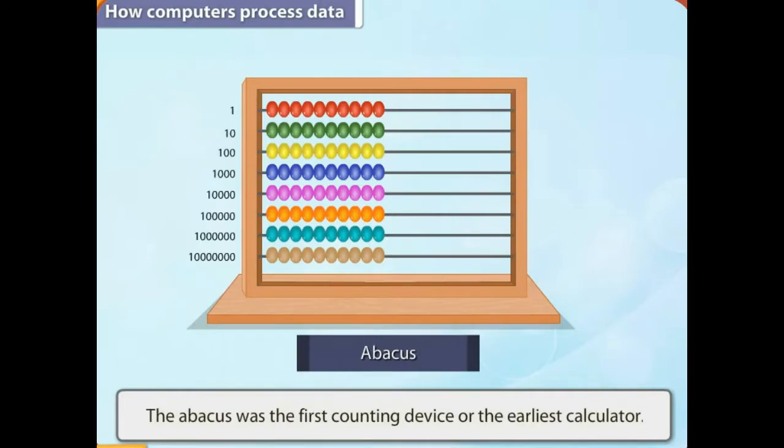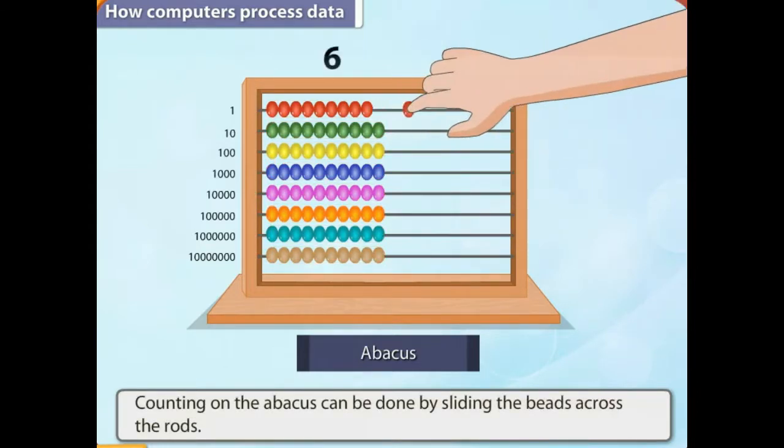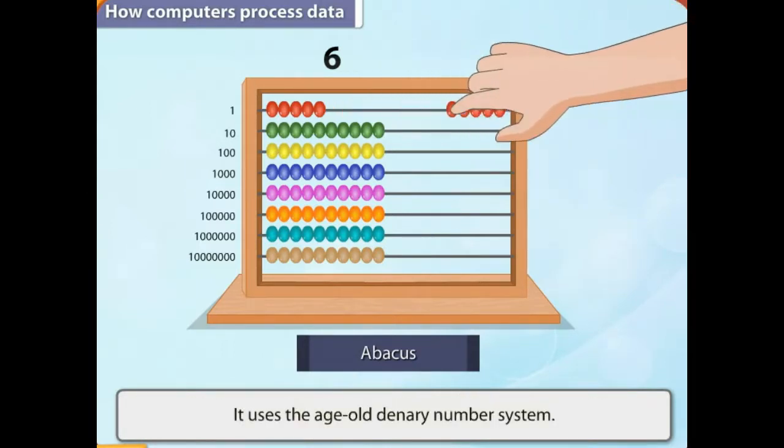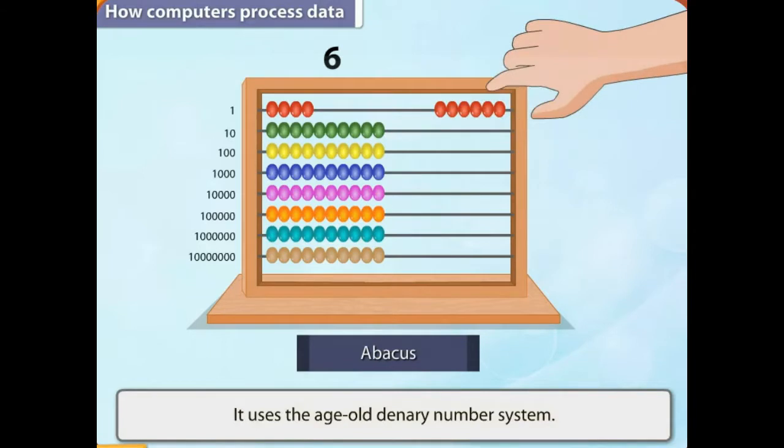It consists of a wooden frame with rods, each having beads. Counting on the abacus is done by sliding the beads across the rods. It uses the age-old denary number system.